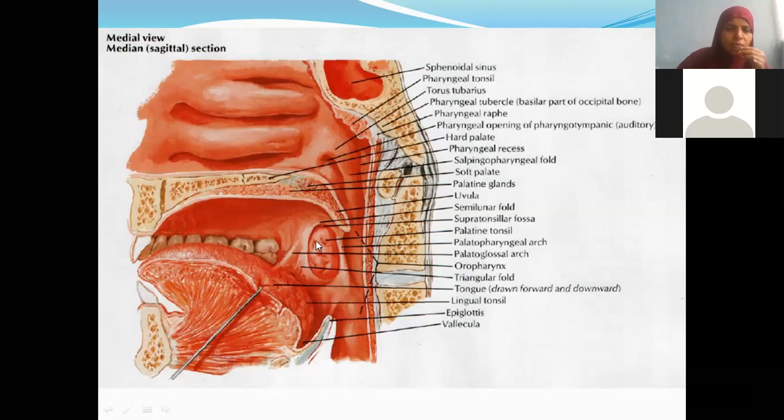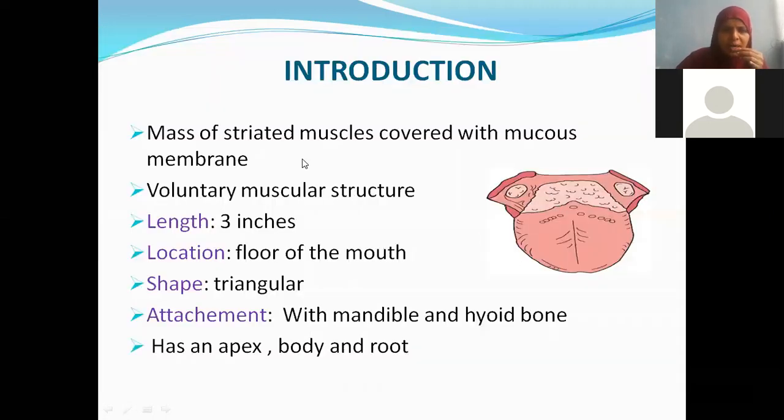Between these two we have the palatine tonsil and this whole thing is tongue which is the tip of the tongue, dorsum and base of the tongue. We are finding few muscles also. Coming to the introduction, it is a mass of skeletal muscle or striated muscle which is covered with mucous membrane.